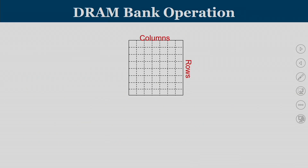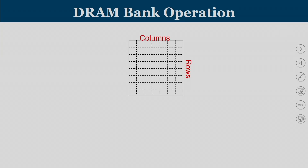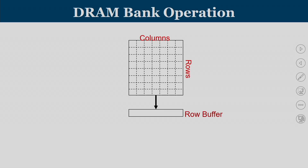Let us understand DRAM bank operation. The DRAM consists of rows and columns with a row buffer. Depending on the addresses coming in, we need to see how the row buffer gets populated.